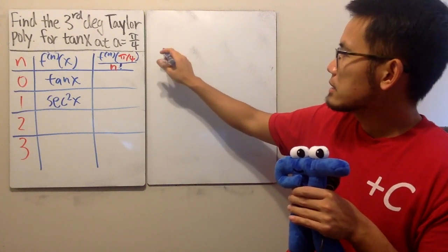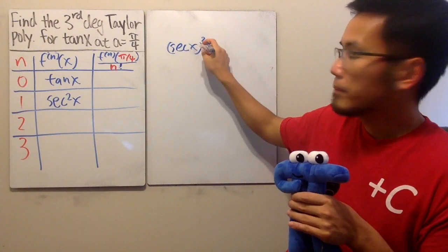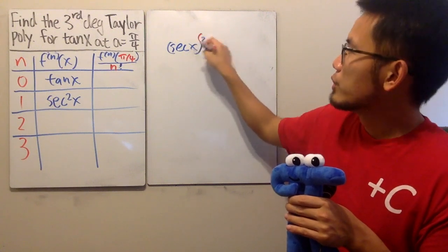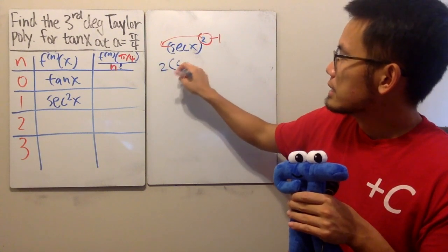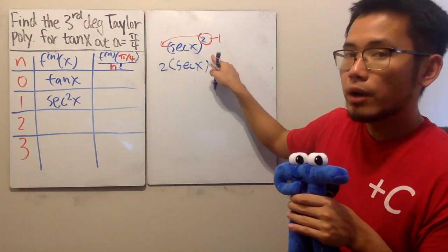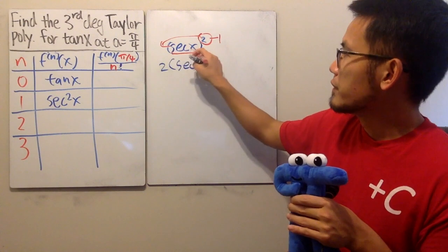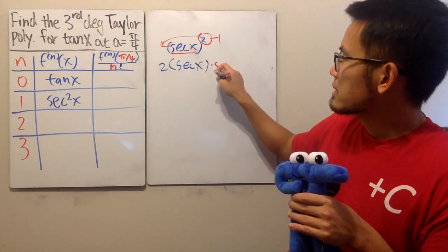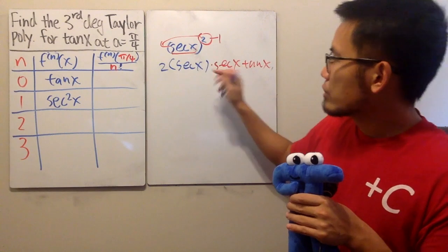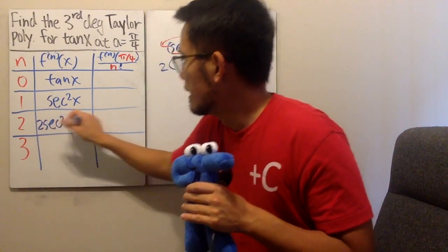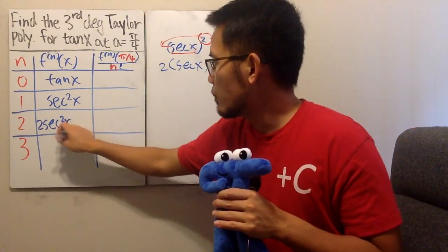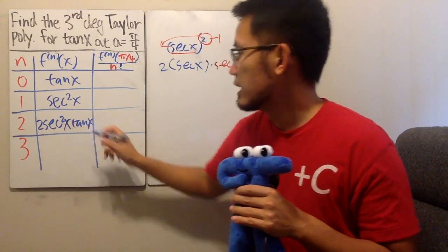Remember, that's the same as saying secant x to the second power. So to differentiate this, we bring the power to the front, minus 1. So we get 2 secant x to the first power, and we multiply by the derivative inside. The derivative of secant x is secant x times tangent x. So all in all, we have 2 secant square x and one more tangent x.